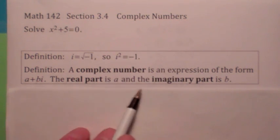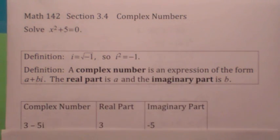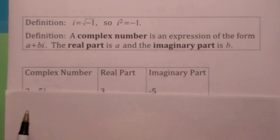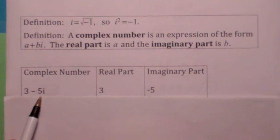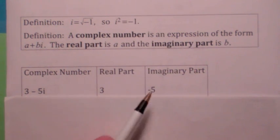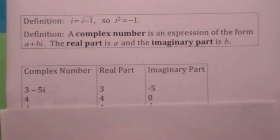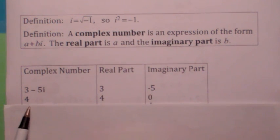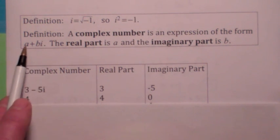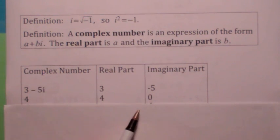The real part is called a and the imaginary part is called b. So for this complex number here, 3 - 5i, the real part is 3, the imaginary part is negative 5. It's not -5i, it's just -5. This is really important here. The number 4 is a complex number because it can be written as a real number plus a real number times i. It just so happens that the imaginary part is zero. So every real number is a complex number whose imaginary part is zero.